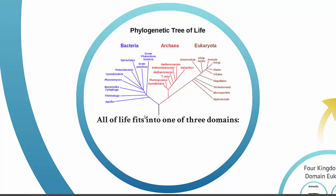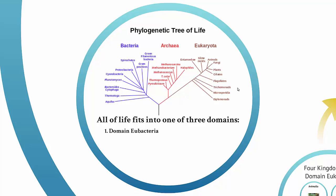All of life fits into one of three domains: the bacteria, archaea, and eukaryotes. If we look at the tree of life, we're sitting right up here. Fungi and plants are others you might recognize, but there's a lot on here that you might not. The three main domains are the eubacteria, also sometimes called the bacteria, the archaea, and the domain eukarya.